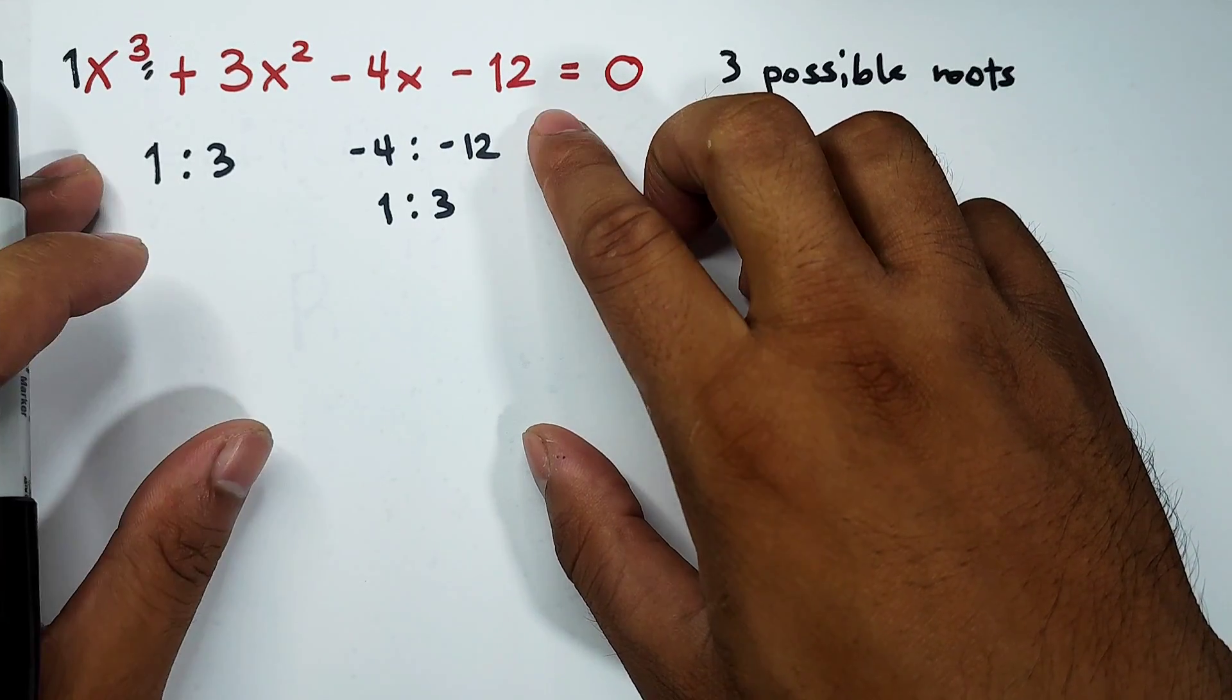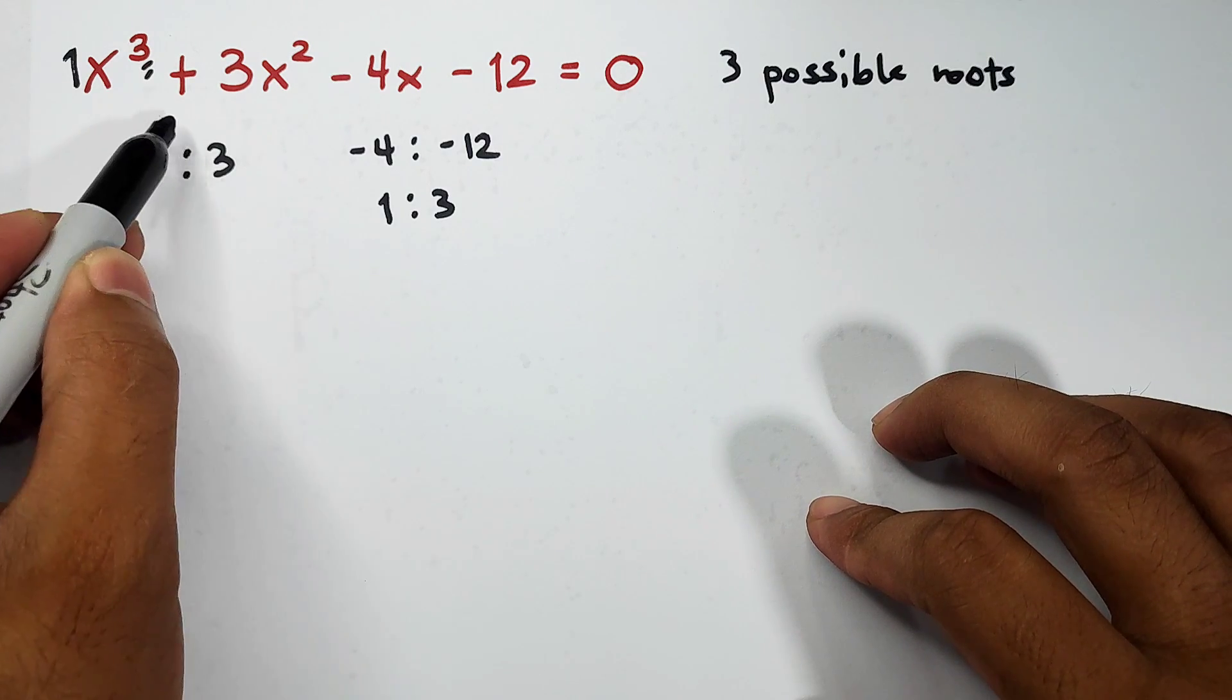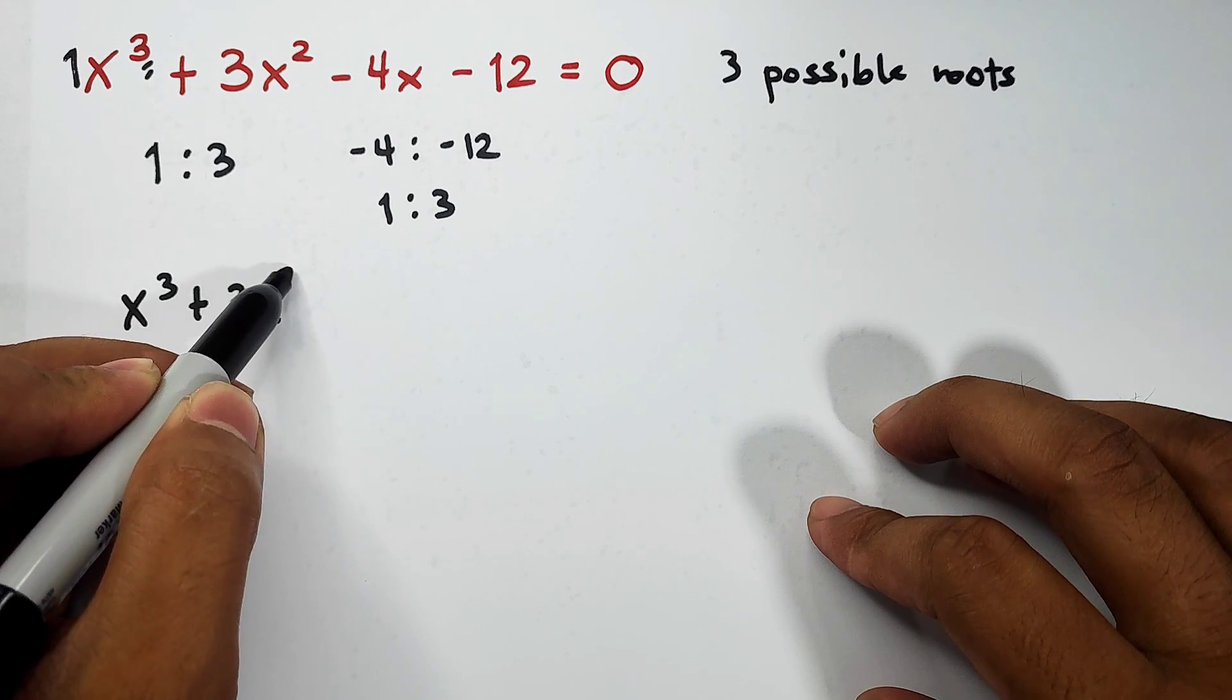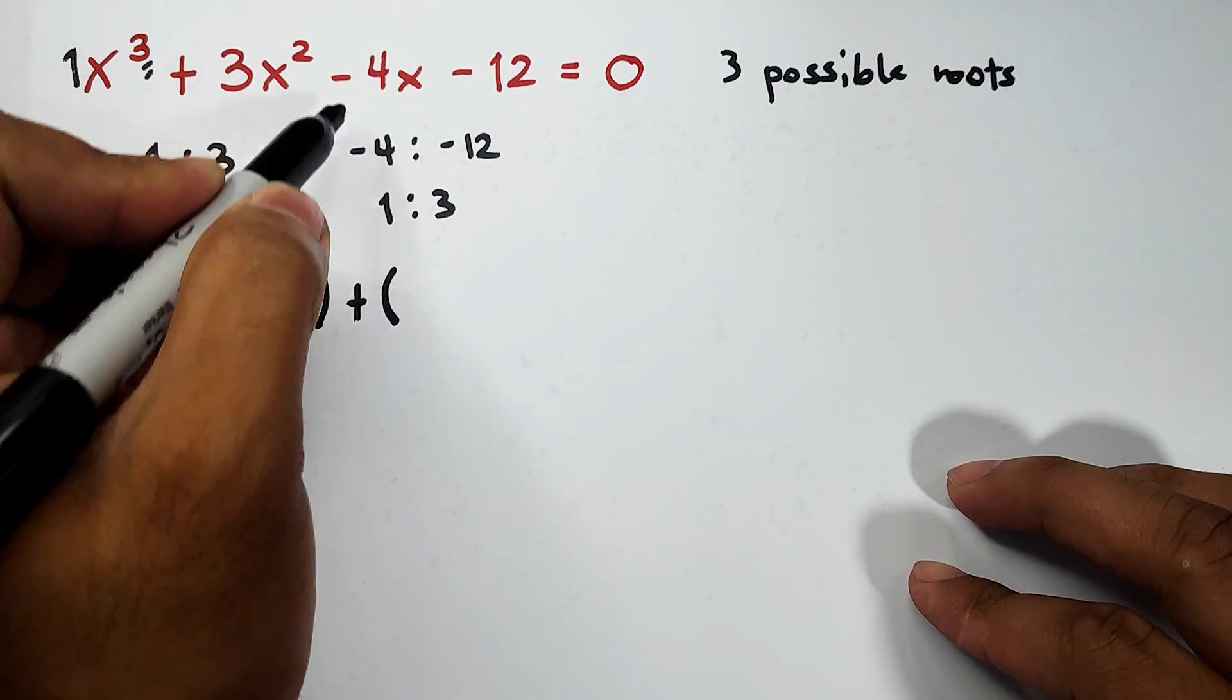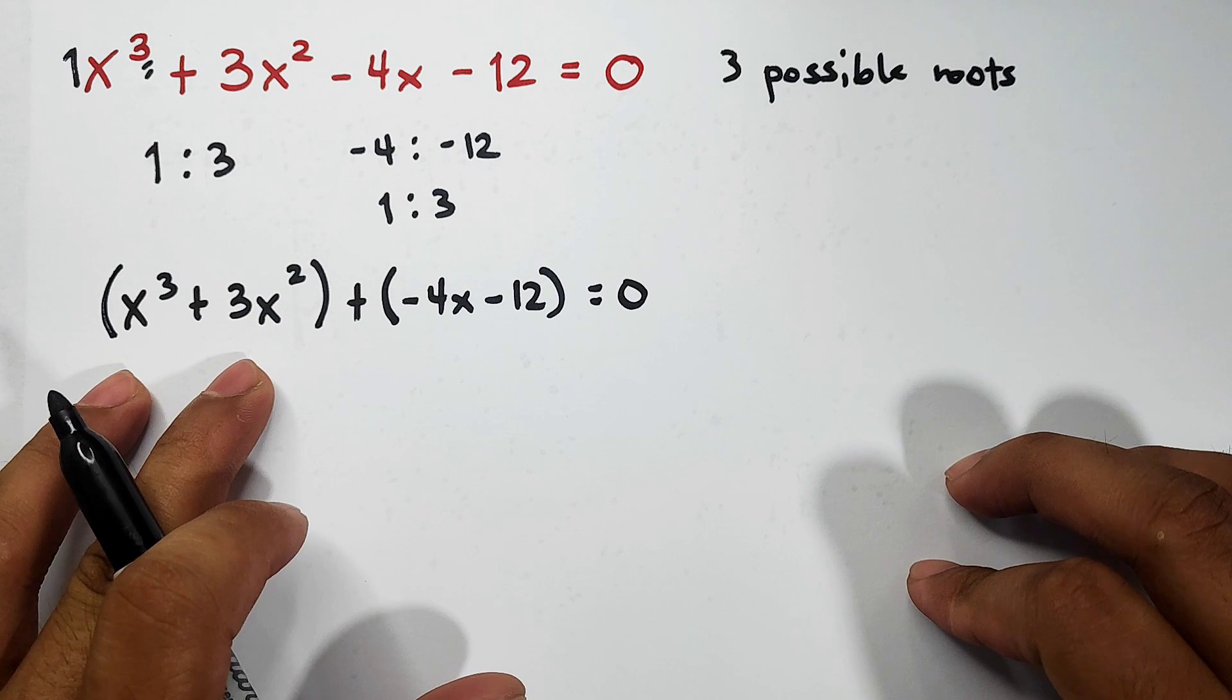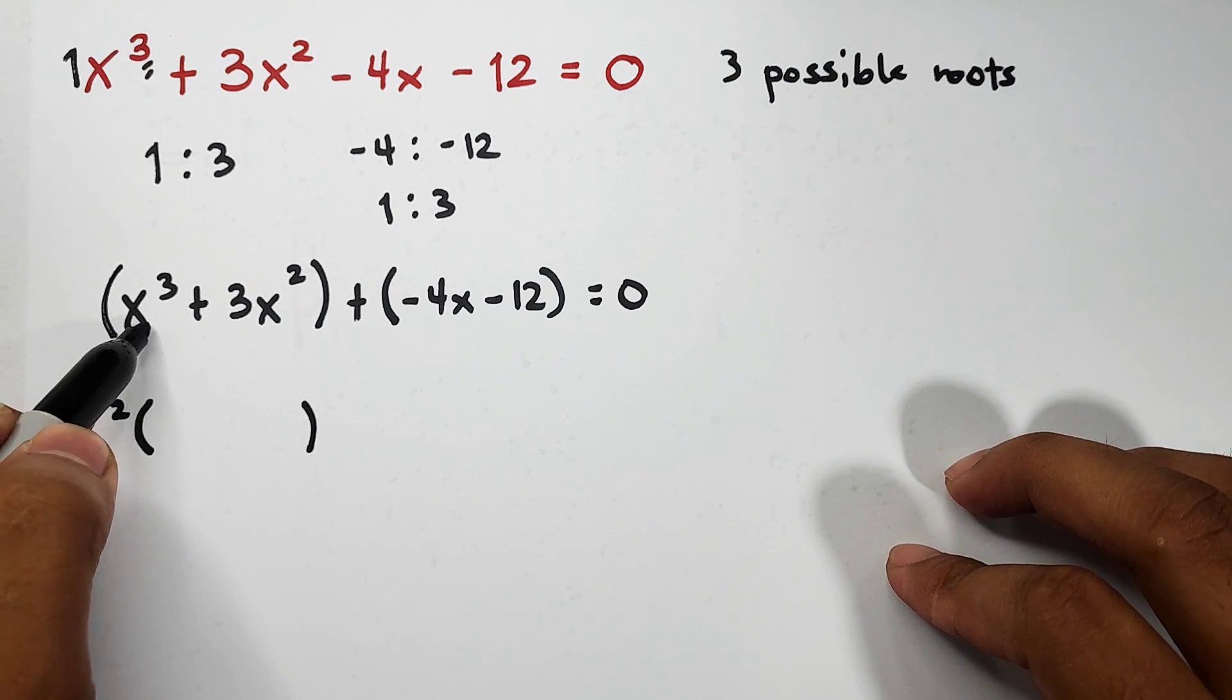How do we do factoring by grouping? First, divide into 2 groups our polynomial equation. We have x cubed plus 3x squared, that's the first group. Our second group is negative 4x minus 12, and then equal to 0. If you notice here, there's a common polynomial factor which is x squared. Factor out the x squared.